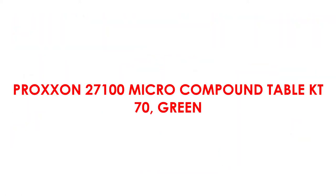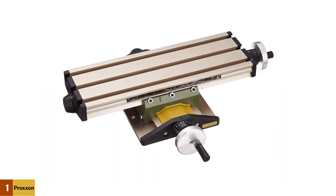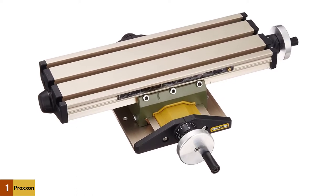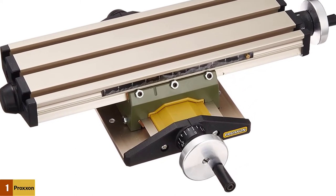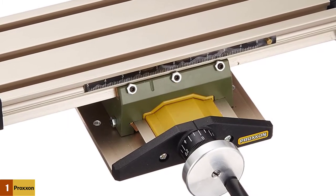At number 1, Proxen 27100 Micro Compound Table KT70, Green. If you need a highly adjustable drill press table, then this product, the KT70 from Proxen, provides precision with as little as 0.05 mm increments and just 1 mm movement for each full revolution of its adjustment.